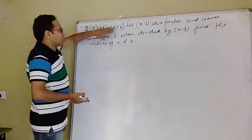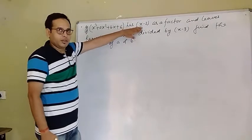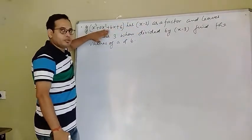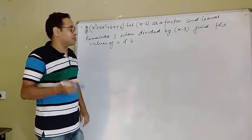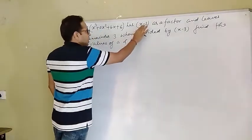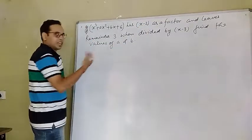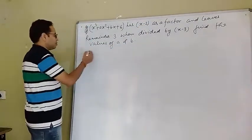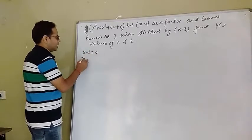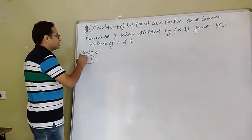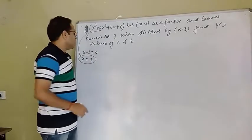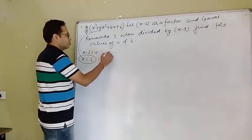Now if this polynomial has x - 2 as a factor, so if I put the value of x = 2, the polynomial reduces to 0 with the help of the remainder theorem. So if I divide this polynomial by x - 2, the remainder will be 0. By remainder theorem, if x - 2 = 0, then x = 2. So if I put x = 2 in this polynomial, the remainder must come out to be 0.